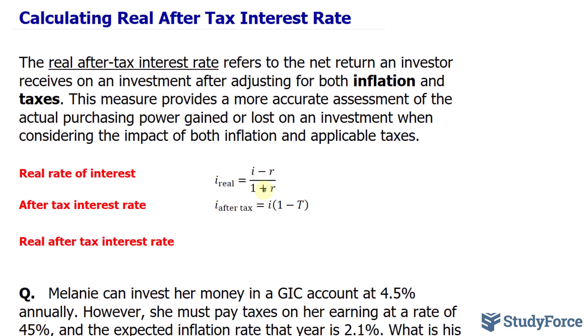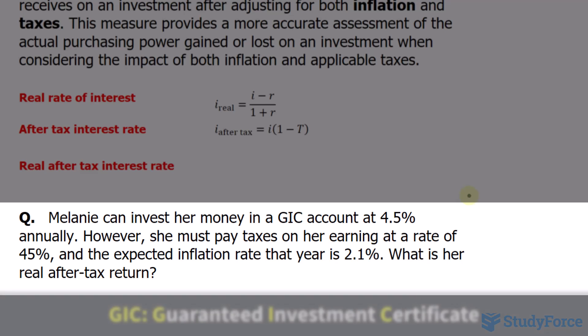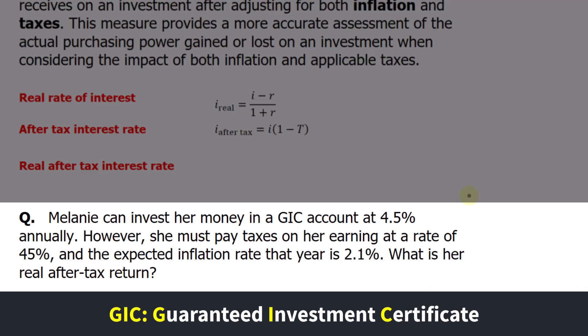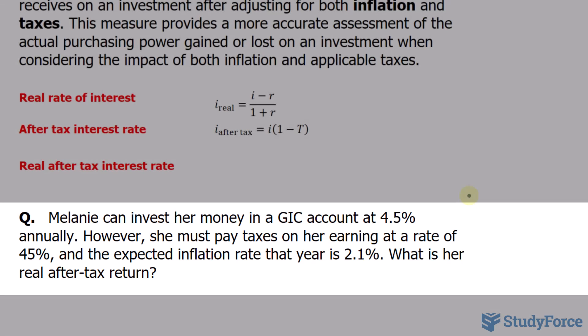We'll talk about these two formulas shown here after I read the question. The scenario goes like this: Melanie can invest her money in a GIC account at 4.5% annually. However, she must pay taxes on her earnings at a rate of 45%, and the expected inflation rate that year is 2.1%. What is the real after-tax return?